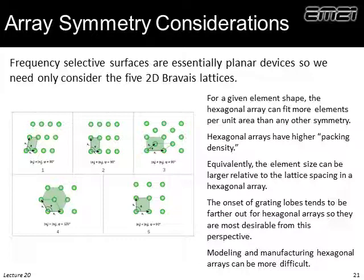We can make conclusions about a frequency selective surface just from its symmetry. Since we're talking about a surface, we only consider two-dimensional symmetry — there are five 2D Bravais lattices. Higher symmetry pushes the onset of grating lobes to higher frequency, which is generally good, and allows packing more elements for a stronger frequency response. The hexagonal array has the highest symmetry of the five 2D Bravais lattices and is usually preferred. It's also much more robust to polarization and angle of incidence. We would only break away from hexagonal symmetry if we specifically want a polarization response.